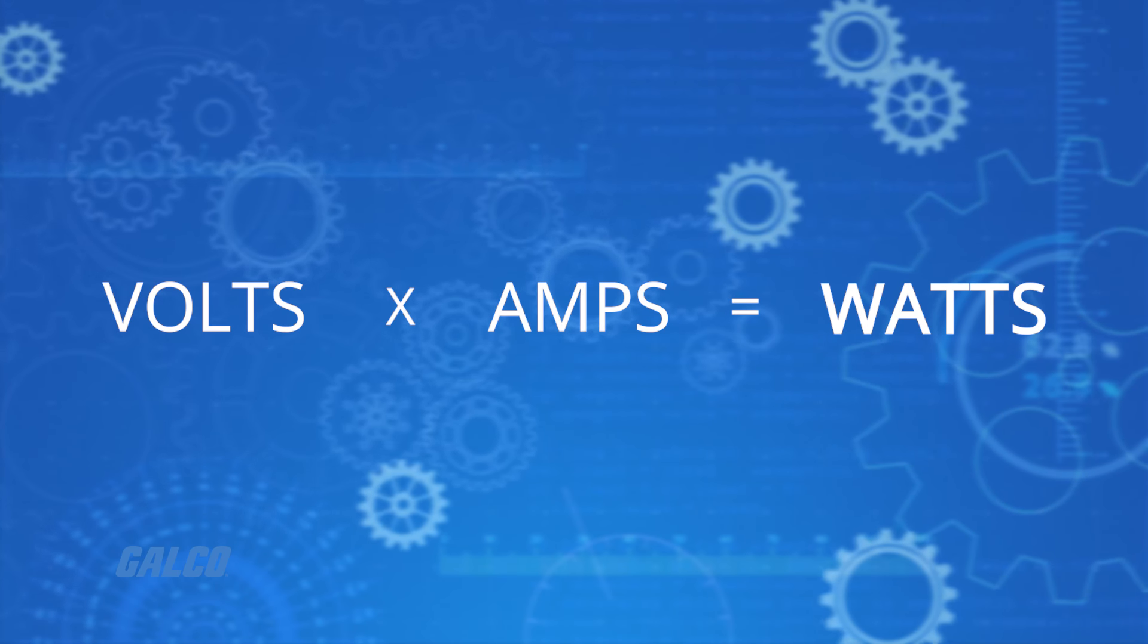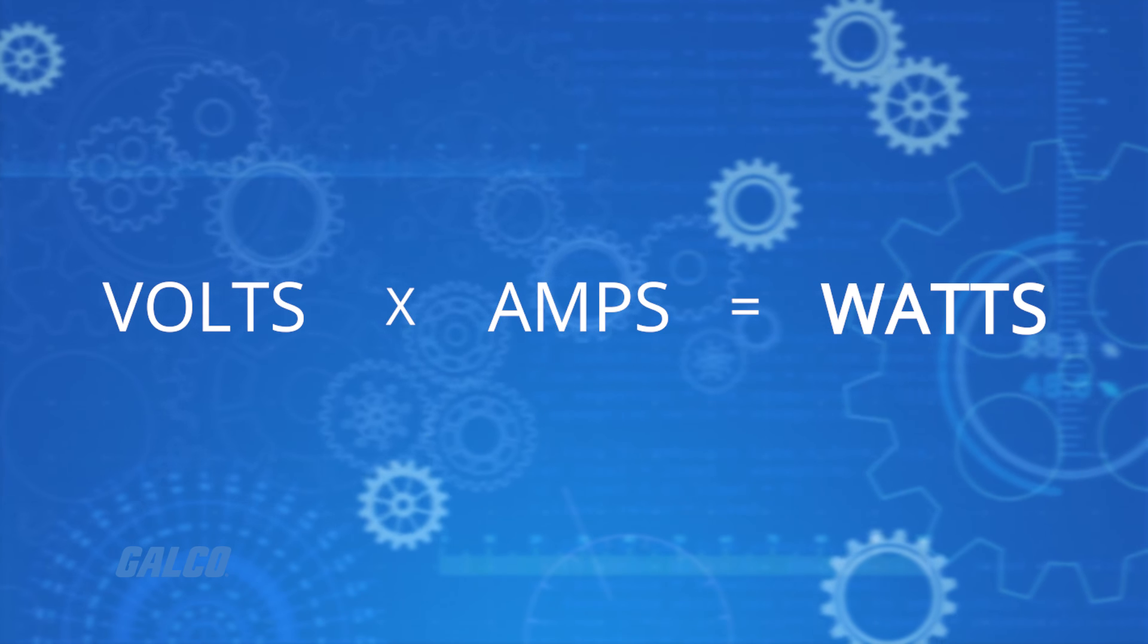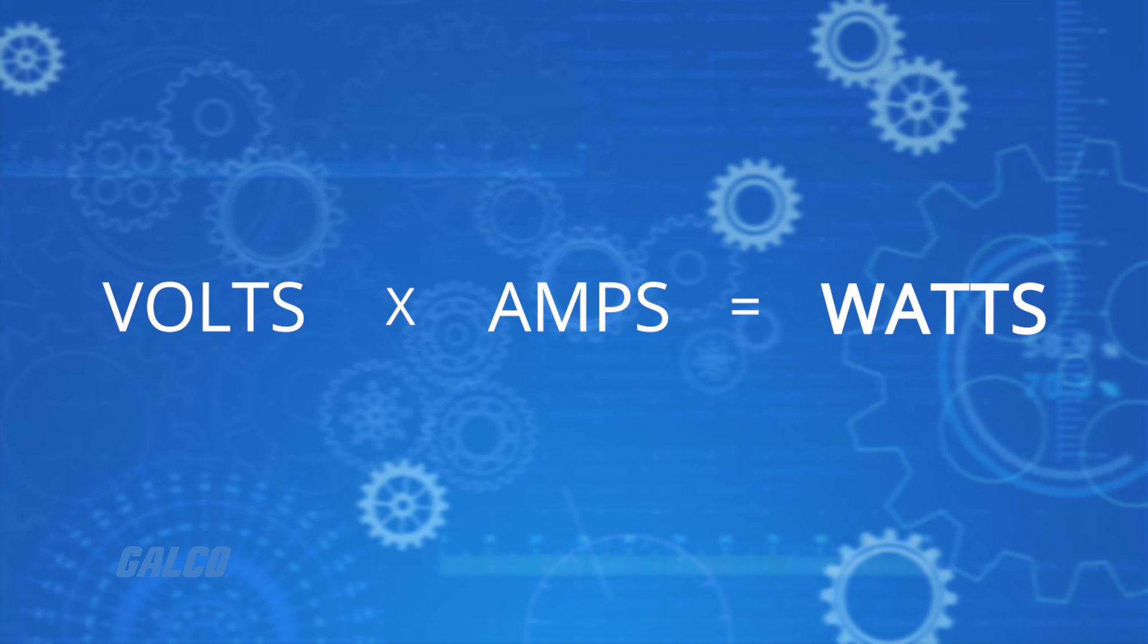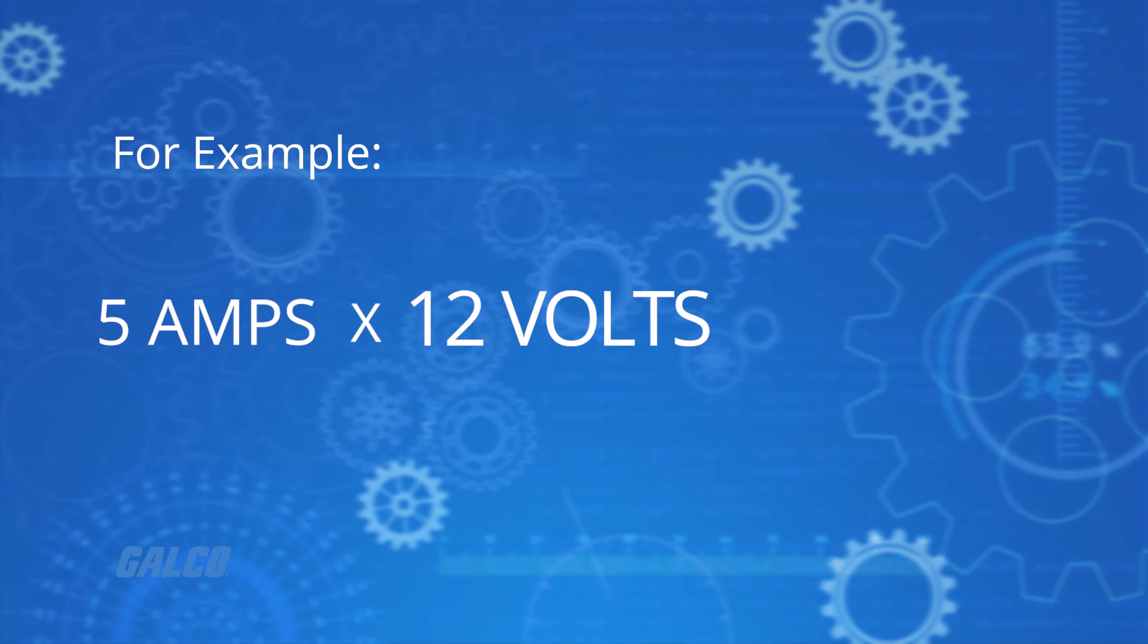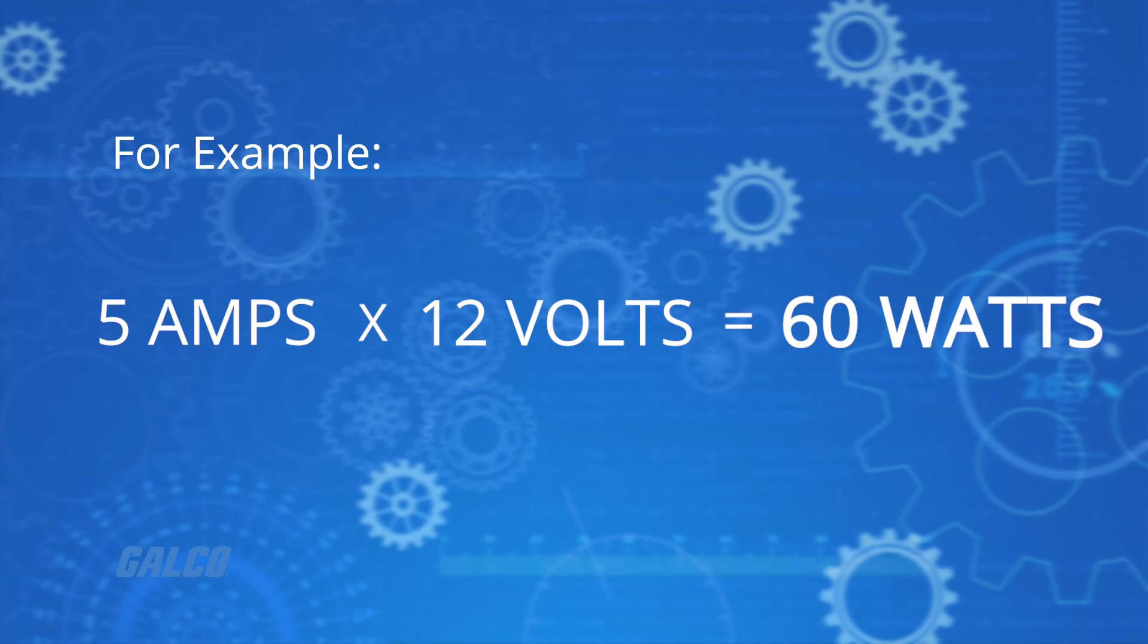Finally, multiply the amount of current measured by your amp meter and the amount of voltage in the circuit together to determine the number of watts. For example, if your circuit uses 5 amps and 12 volts, then it is using 60 watts of power.